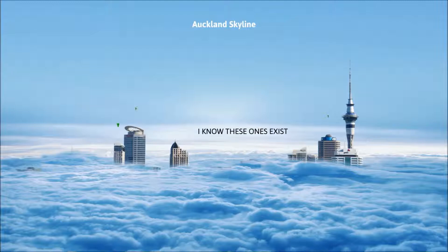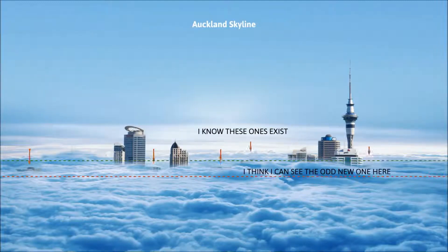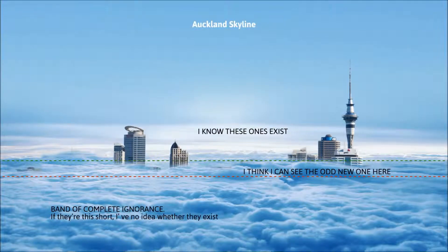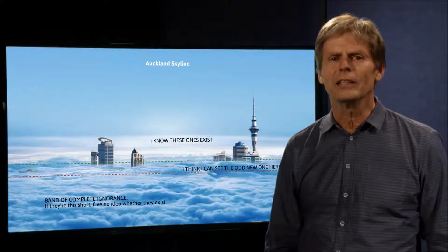So here are some that I know exist because they poke up well through the fog. Then there's a few more shorter ones I think I can maybe make out. And if they're shorter than that, well I've no idea whether there's anything there or not. So where am I going with this?